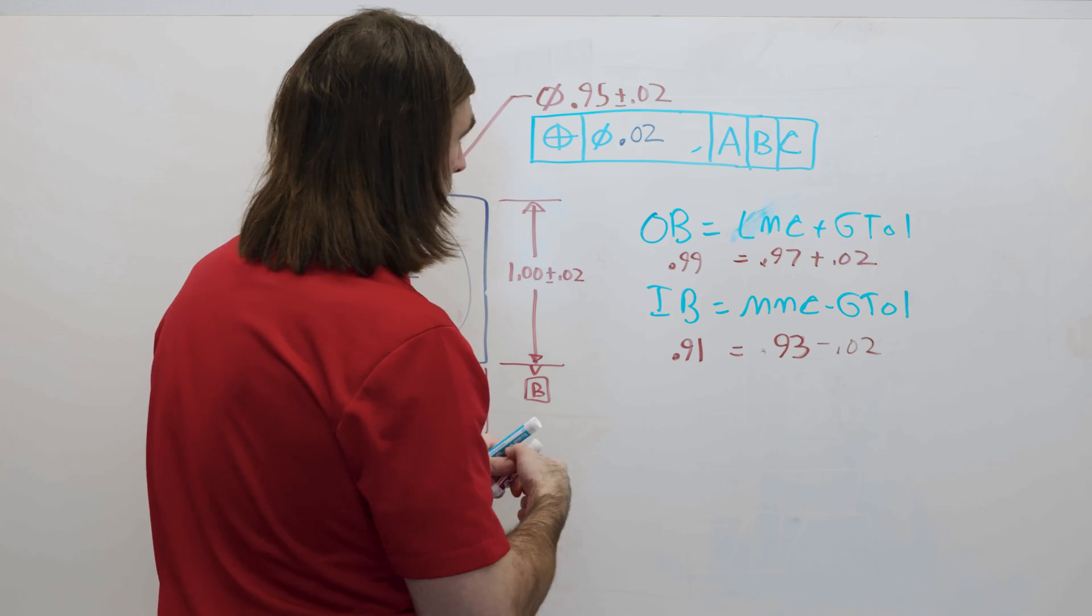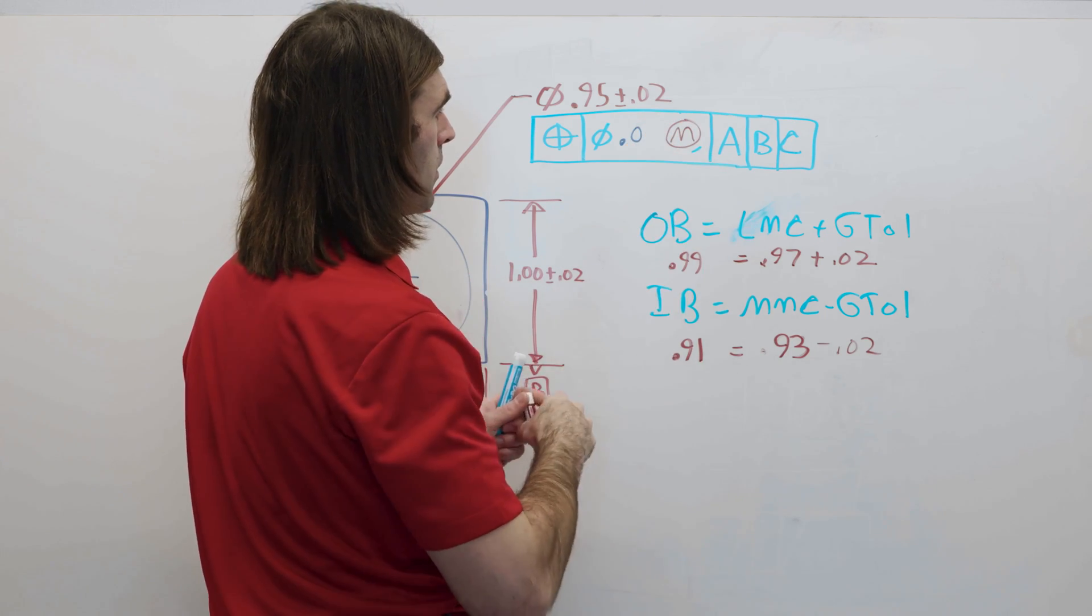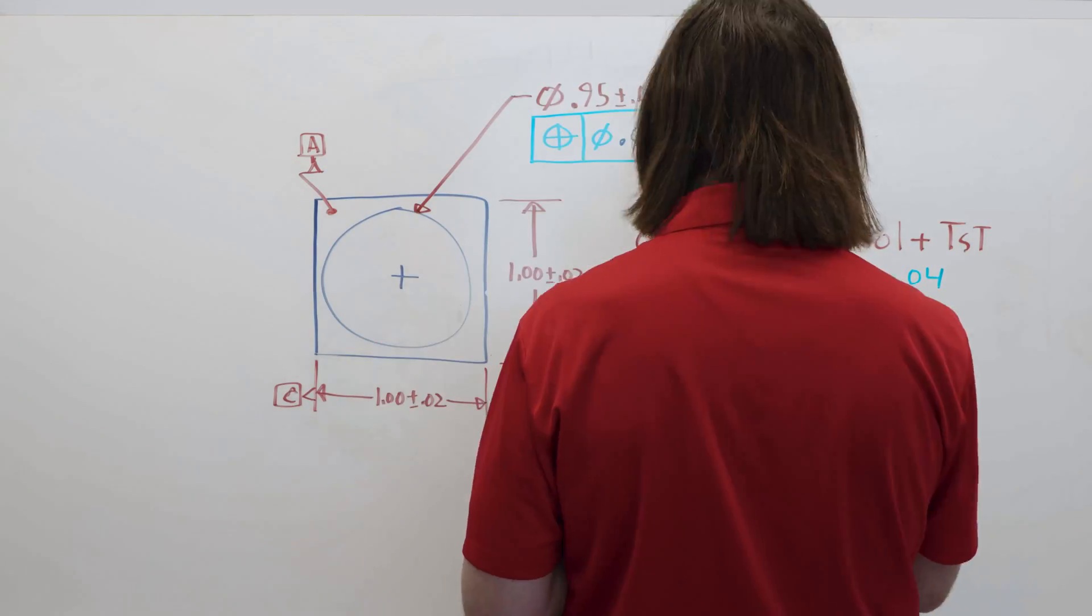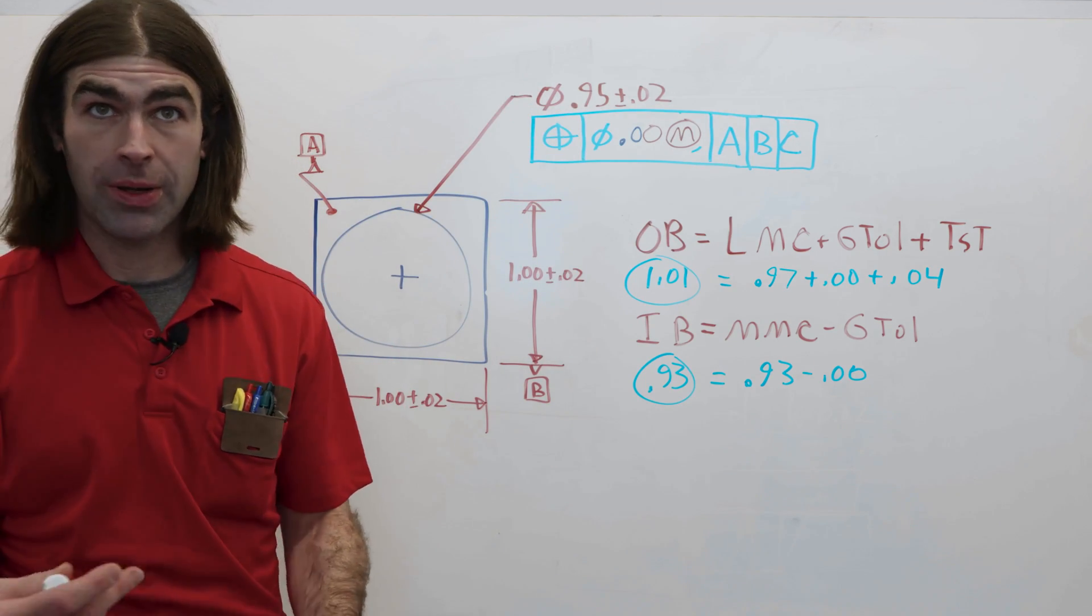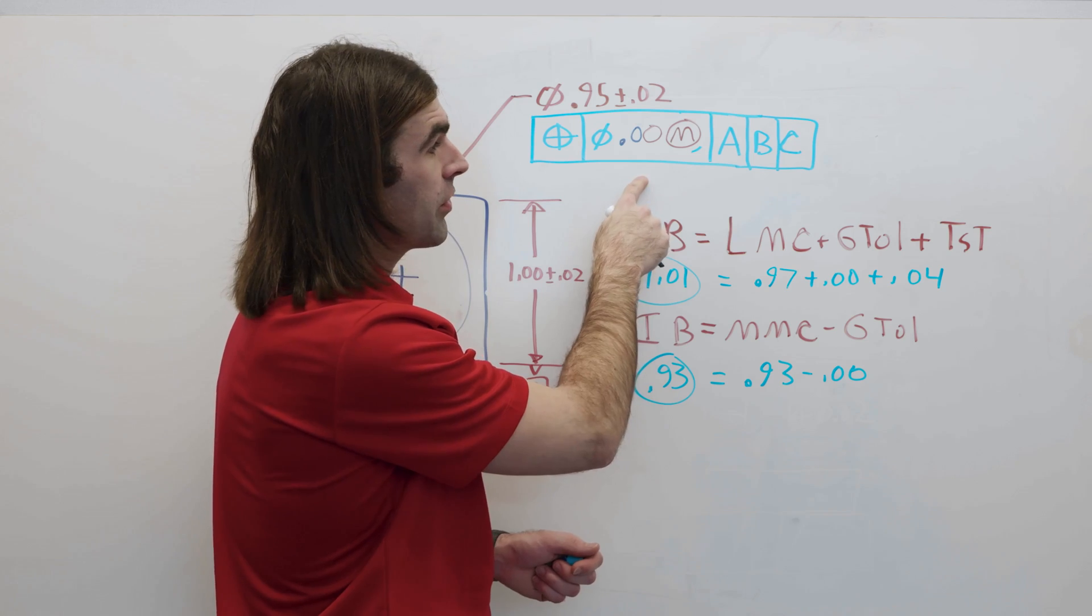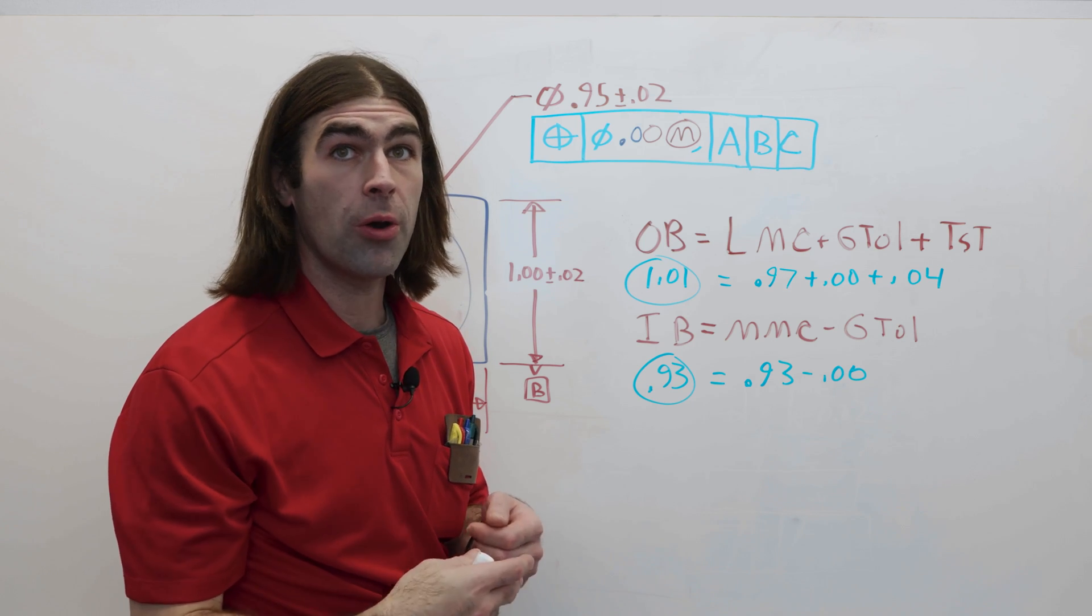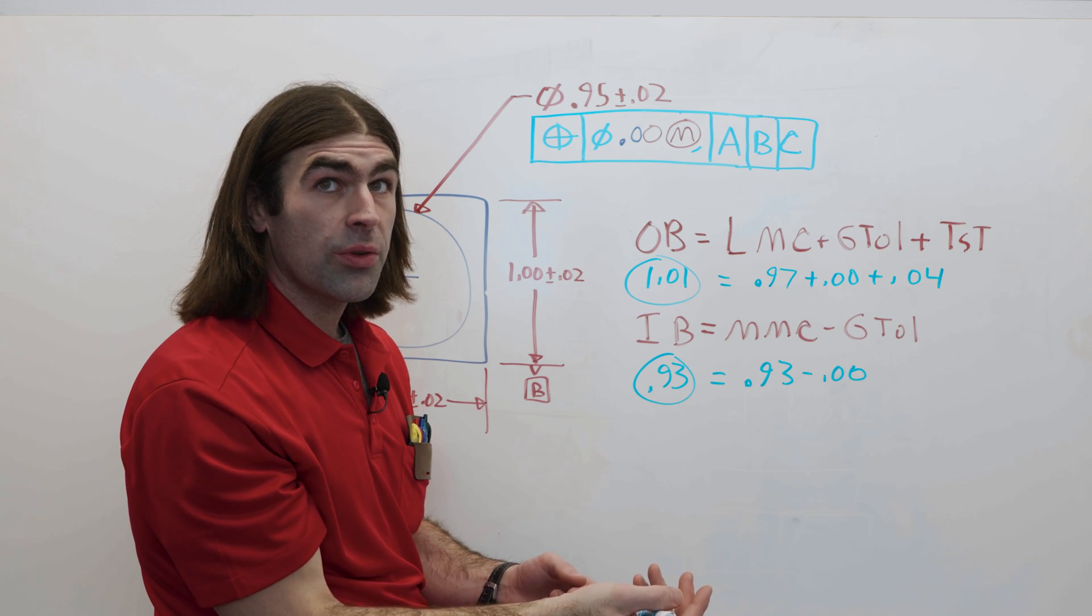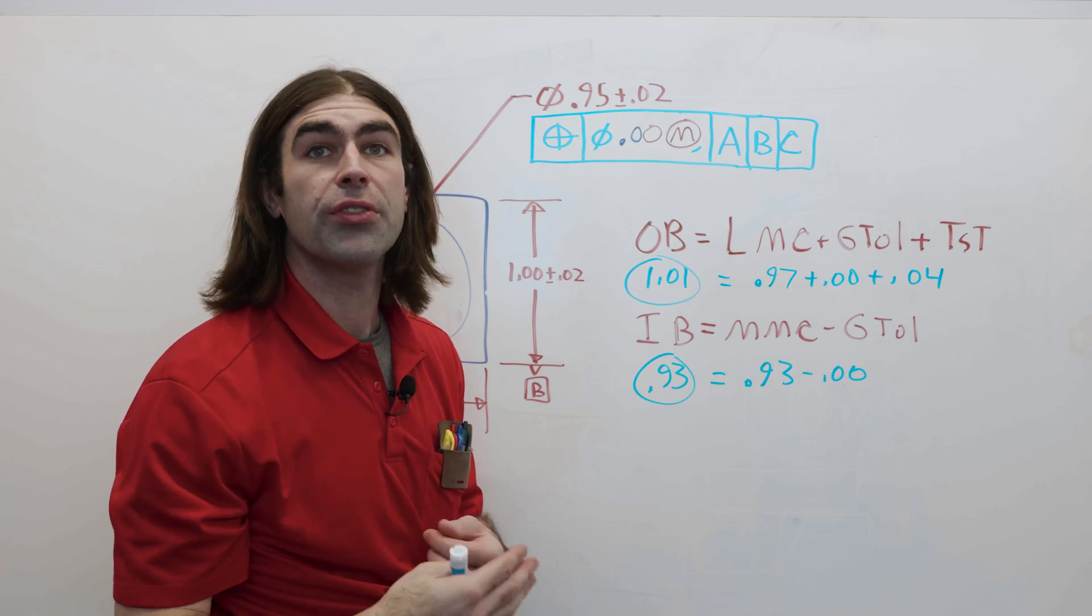Now, let's say we use the MMC, and let's do 0 at MMC and see what happens. So, at 0 at MMC, we're going to get the largest the hole can be, the LMC, plus the geometric tolerance, plus the total size tolerance. That's where you get the tolerance for 0 at MMC. So, if the hole comes in at 0.93, you have 0 positional tolerance. If it comes in at 0.97, you have 0.040 of positional tolerance.